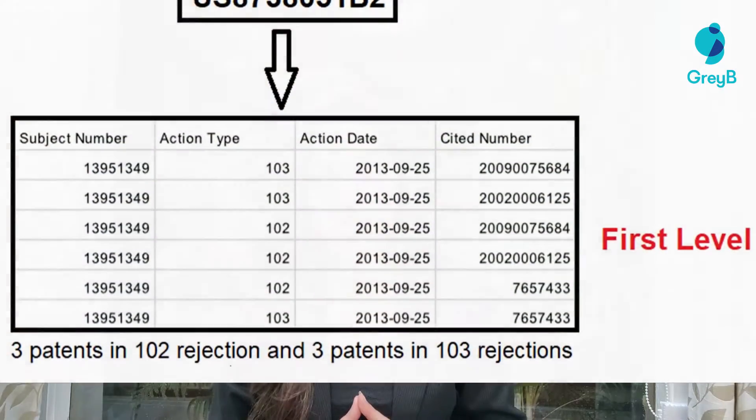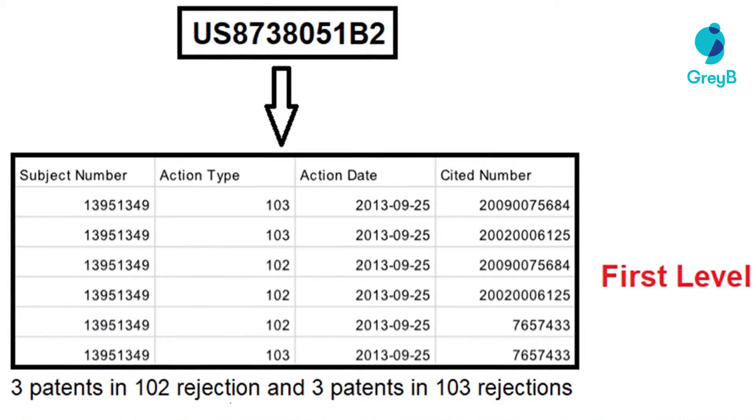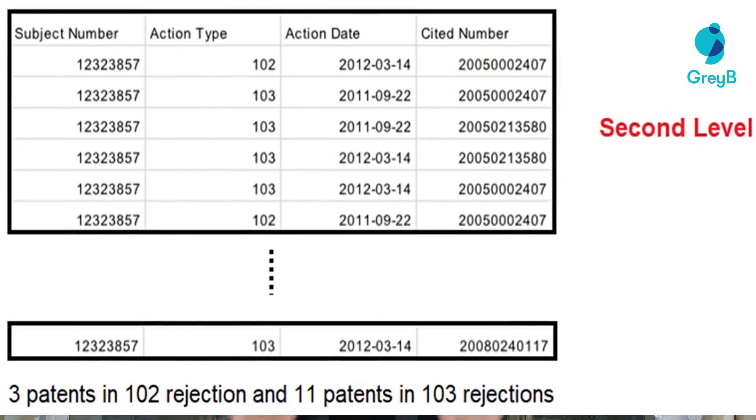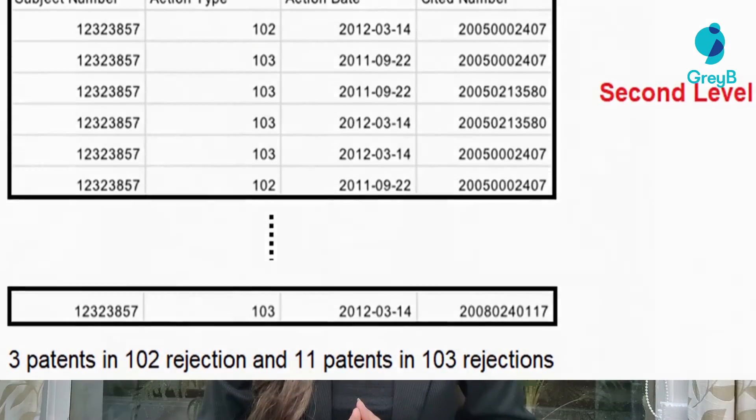Stop — this is not the right way to do it. Here's how BOS does it. BOS starts with the citations linked with 102 and 103 rejections. For the same patent, there are three patents used in 102 rejections and three patents used in 103 rejections, making it six citations to analyze. And the second-level citations boil down to just 14 from 5549. Isn't that amazing? You just saved yourself hours of work.